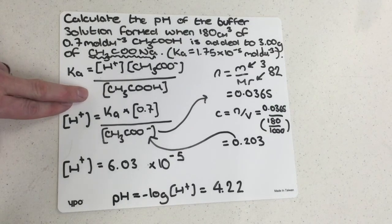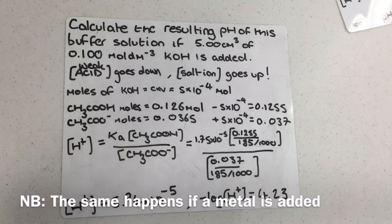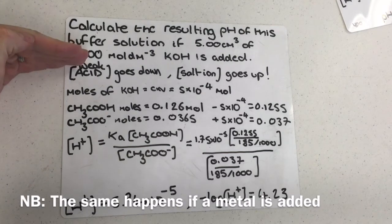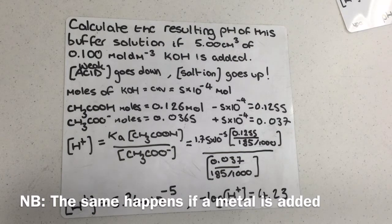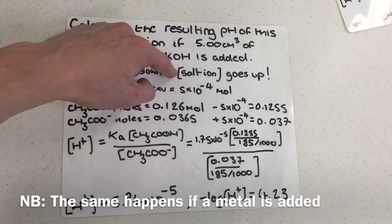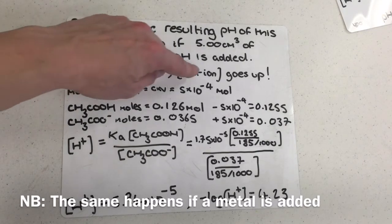That's how we calculate the pH of a buffer solution — but what might the examiner do next? The examiner might give you a calculation where something has been added to the buffer solution causing a set of changes. The question reads: calculate the resulting pH of this buffer solution if 5 centimetres cubed of 0.1 mol per decimetre cubed KOH is added. The amount of weak acid is going to go down and the salt ion concentration is going to go up, because the alkali will react with the acid to produce more salt.